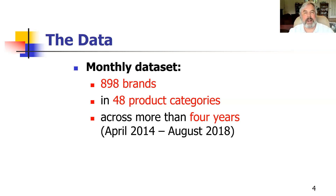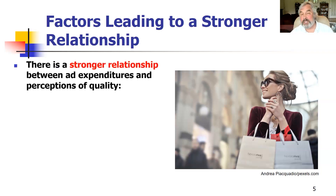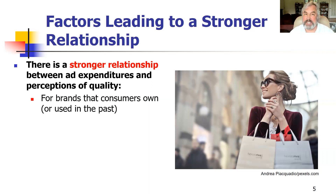We examined a range of background factors related to the brand, the category, and the broader economy to look at moderating factors on that relationship. One factor leading to a stronger relationship: brands that consumers owned or used in the past. Consumers are more attuned to the actual advertising of brands they're familiar with and have used, and therefore have a sense of the expenditures and can use that as a proxy and a cue for quality.